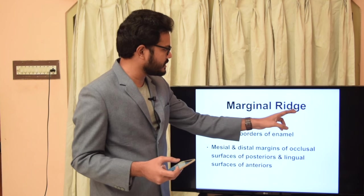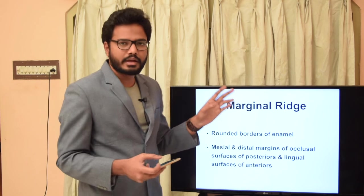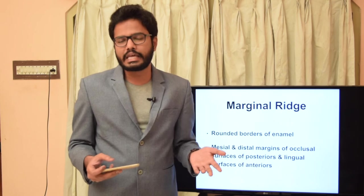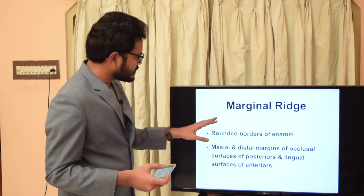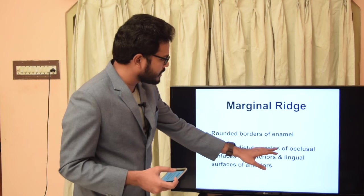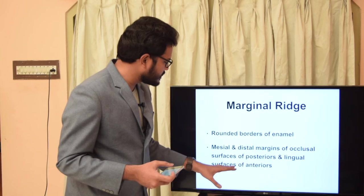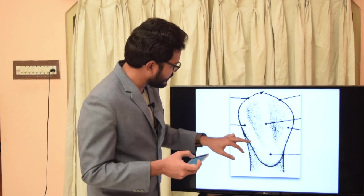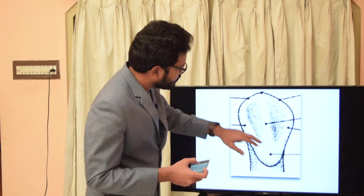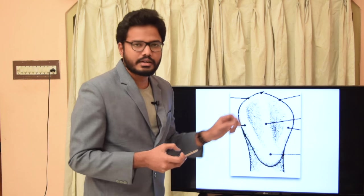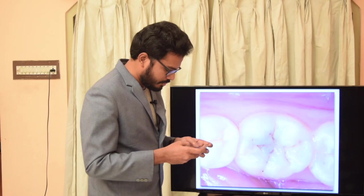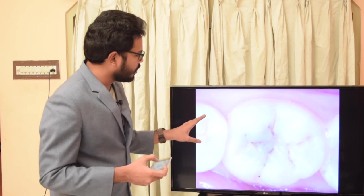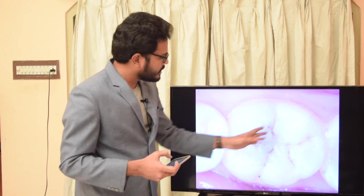Marginal ridges are linear elevations present on the margin — on mesial and distal aspects of premolars, or on lingual surfaces of anterior teeth. These marginal ridges are rounded borders of enamel present on mesial and distal margins of occlusal surfaces of posteriors and on lingual surfaces of anteriors. On the lingual surface of an anterior you can clearly see rounded linear elevations on mesial and distal aspects — these are the marginal ridges.